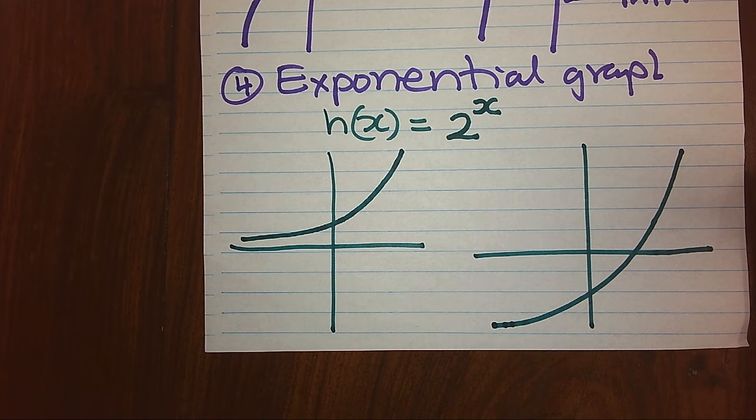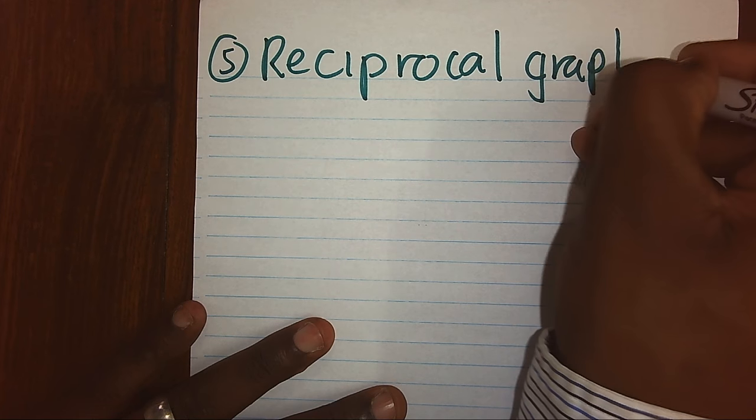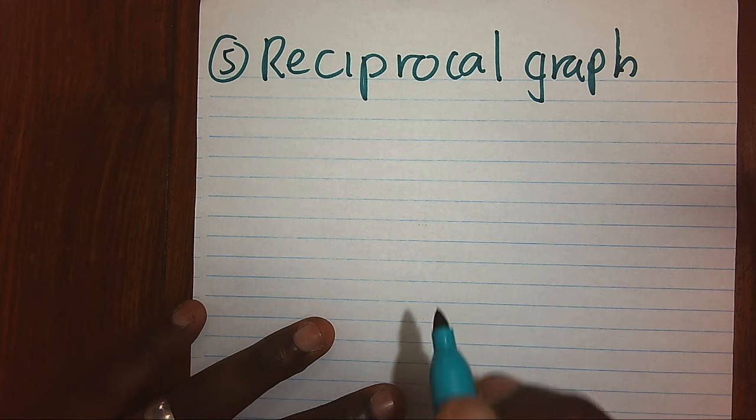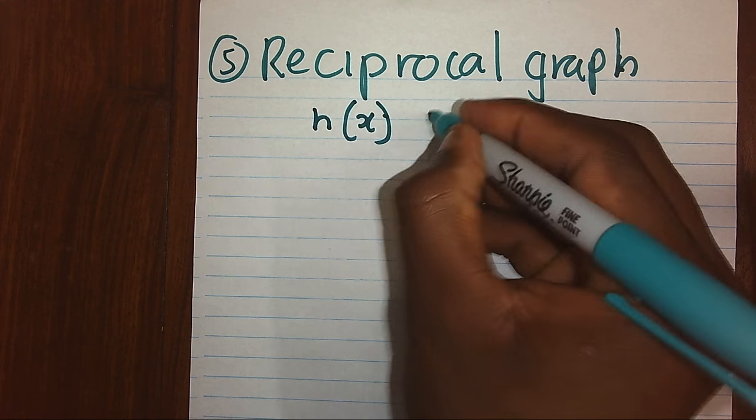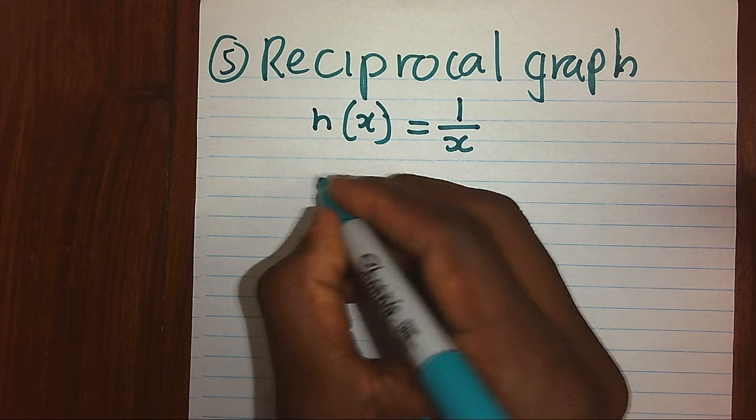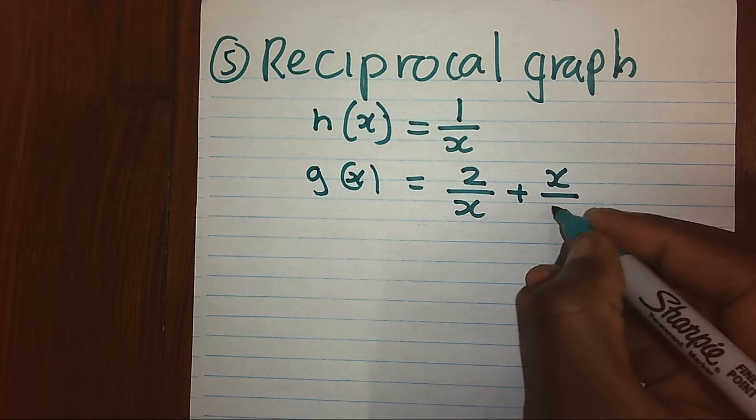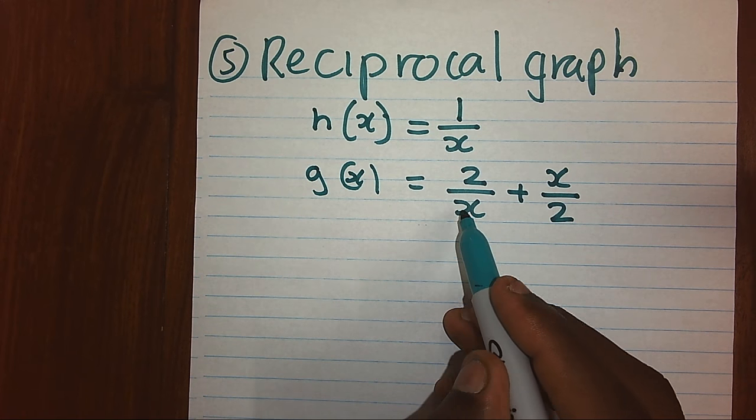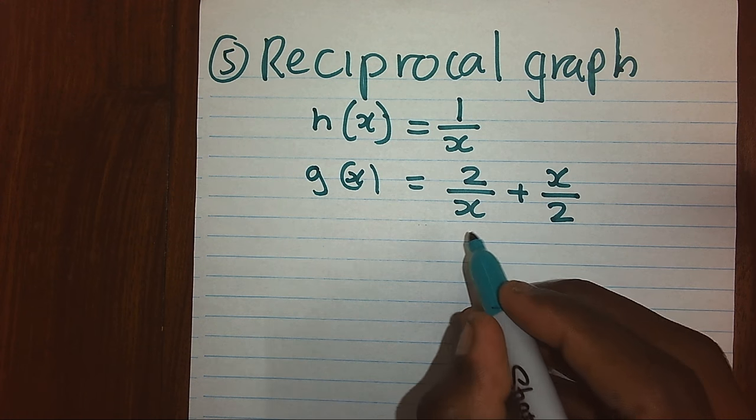We also have another very important graph which is known as a reciprocal graph. This is one of the most important graphs that confuses students. Usually, the unknown is part of the denominator. Sometimes we can have many values in the numerator, but as long as there is a denominator which exists as an unknown, then we shall be having a reciprocal graph.